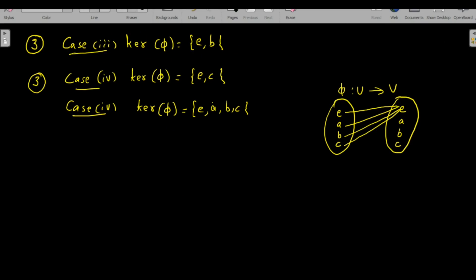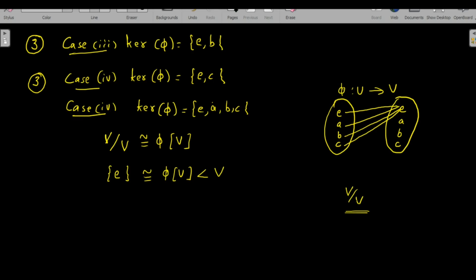The last case: kernel of φ = {e,a,b,c} = V. In this case all elements of V are mapped to the identity element e. By the Fundamental Homomorphism Theorem, V over V is isomorphic to φ(V). The factor group V/V contains only one element, so it is isomorphic to {e}.